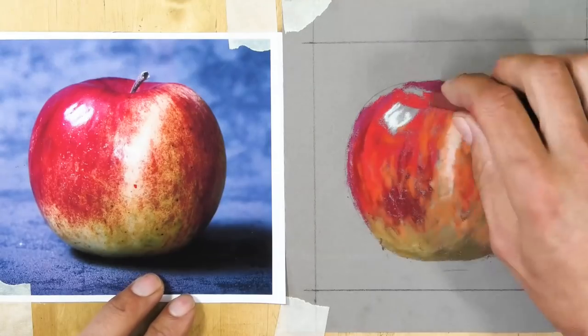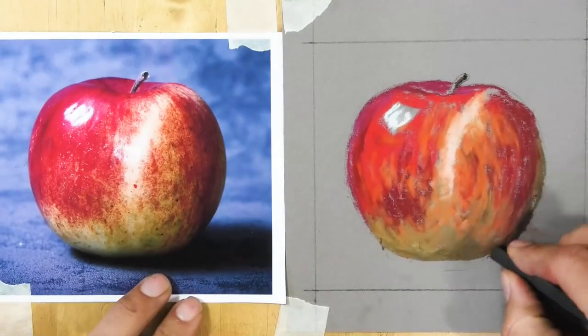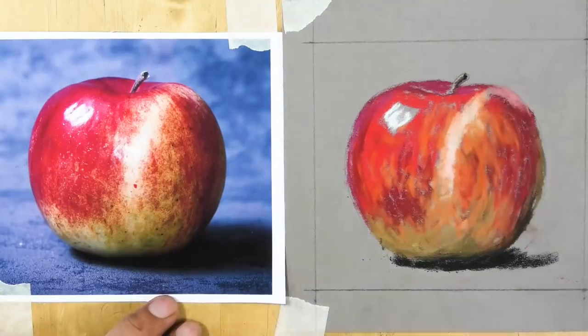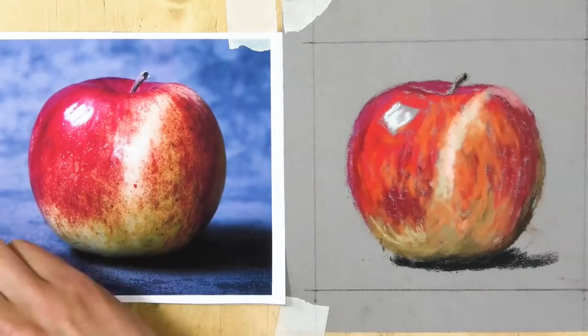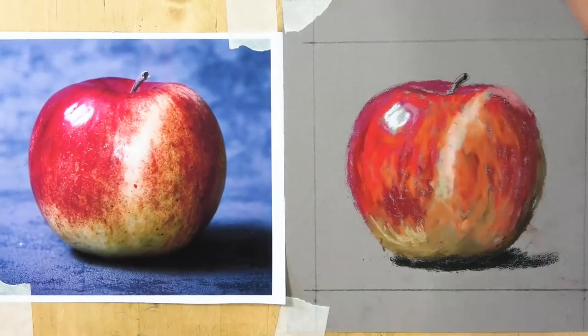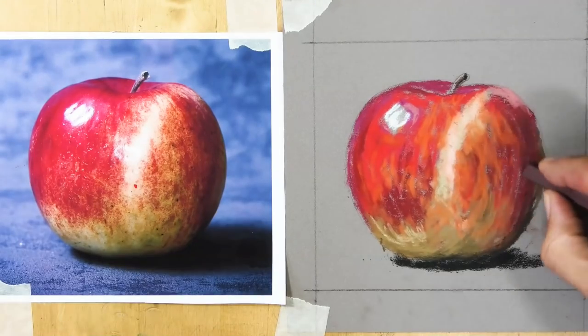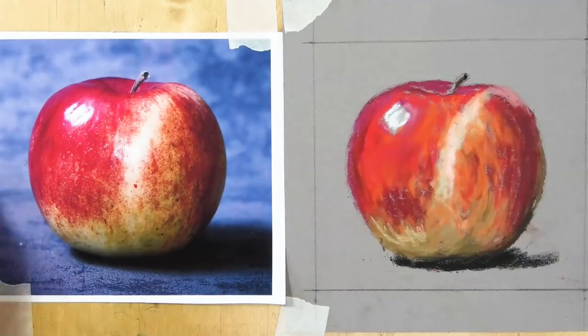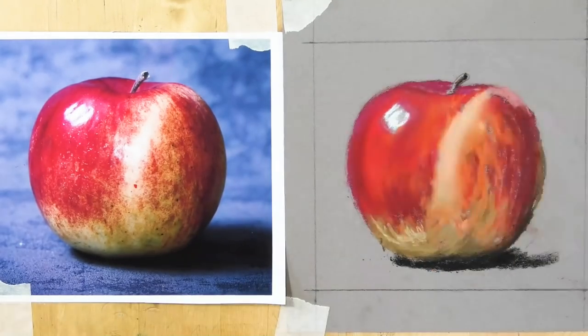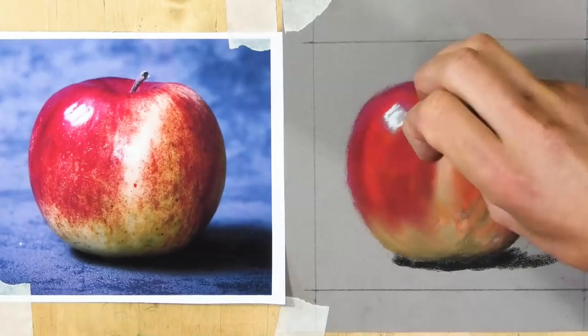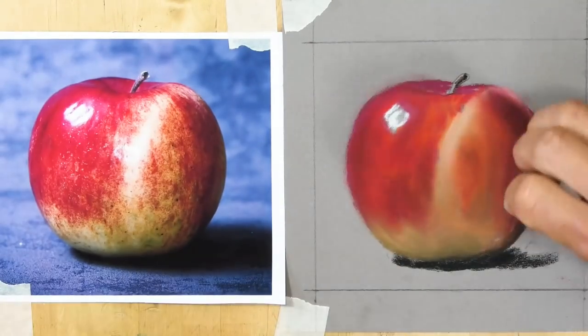Now, any good quality soft pastels would be sufficient, and I'm using my new Faber-Castell polychromos for the most part on this drawing. Once I've got the major colors and tones blocked in, I'm blending it all with my finger, creating a real soft underpaint.